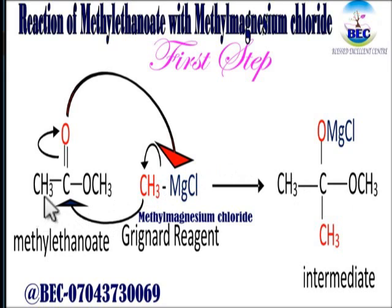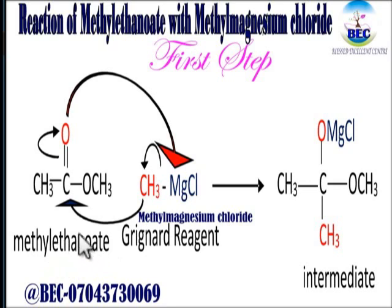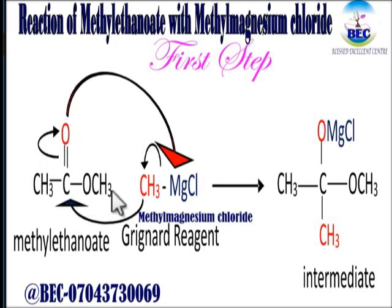We have CH3C double bond O then OCH3 — that is methyl ethanoate. Watch my video on nomenclature and you'll know how the name is formed. In the reaction mechanism, one of the bonds in the double bond here will be cleaved, giving the oxygen in red a negative charge and the carbon here a positive charge.